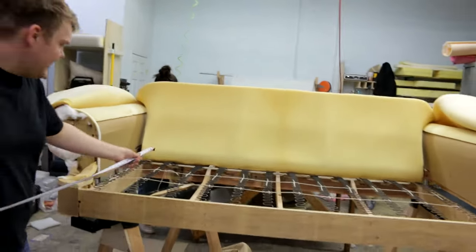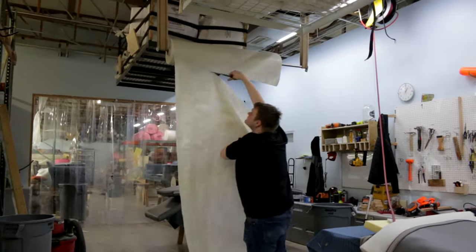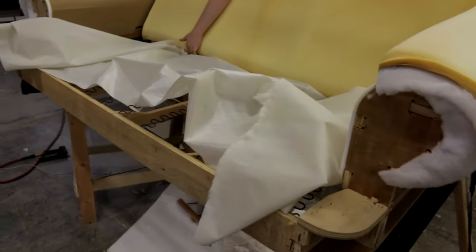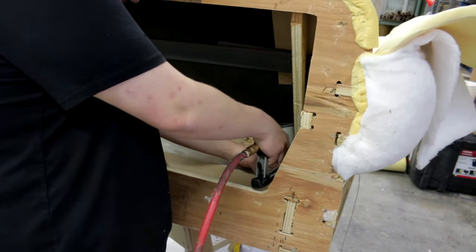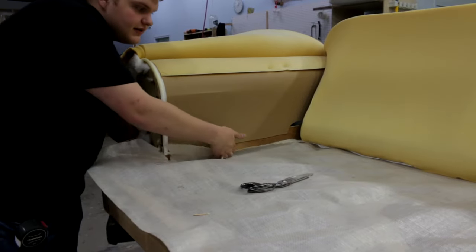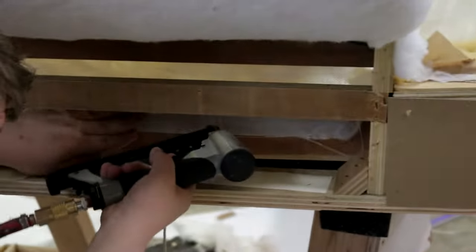Now we'll cut a piece of liner to go over the springs. We use a material called FLW, but you can use any kind of upholstery scrap fabric that is big enough to cover the entire area. Start by stretching and stapling along the back and a single side before moving on to the other side, stretching it as tight as you can and stapling it down. Then you'll move on to the front.